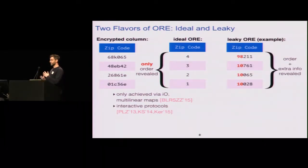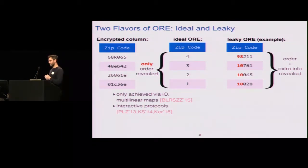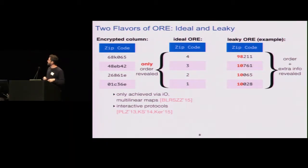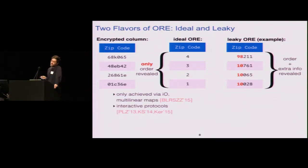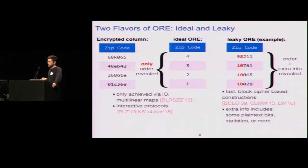The next type after ideal is leaky ORE. In addition to revealing what order the plaintexts are in — which is always required by correctness — leaky ORE, depending on the construction, may also reveal, say, some of the initial digits of the zip code. The good news is that we have fast block-cipher-based constructions and these are what people are using now. But this extra information includes plaintext bits and statistics on the zip codes.